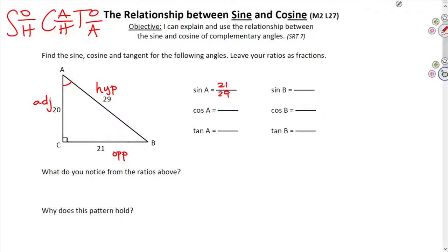The cosine ratio for angle A is the adjacent over the hypotenuse, which is 20 over 29. And the tangent ratio for angle A is the opposite over the adjacent, or 21 over 20.